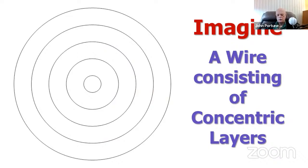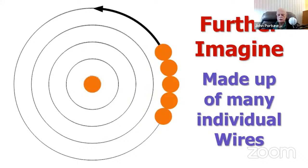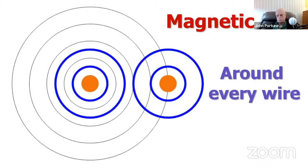I'm going to show you how you get to why skin effect takes place. Imagine that the piece of wire, cut in half and looking at the end, is a bunch of concentric cylinders around each other — just a mental picture, a mind experiment. Consider that the wire is just a series of concentric cylinders or layers. Also imagine that each of those layers is made up of individual wires, because this is what leads us to understanding why skin effect occurs.